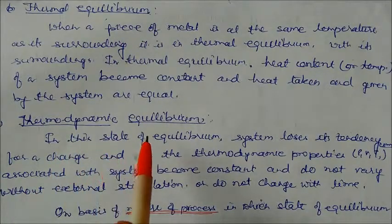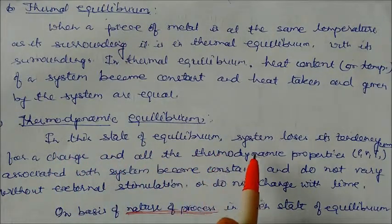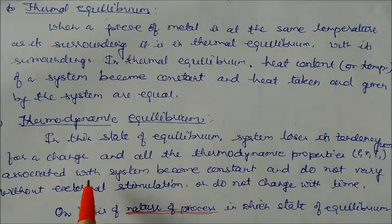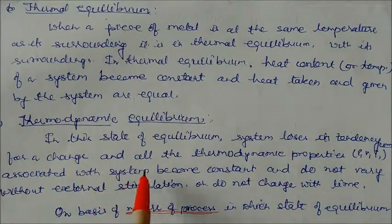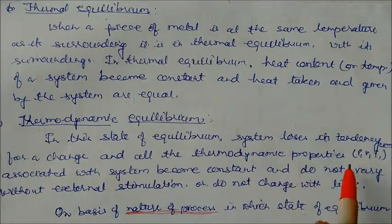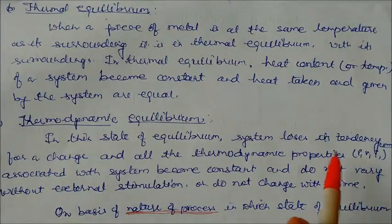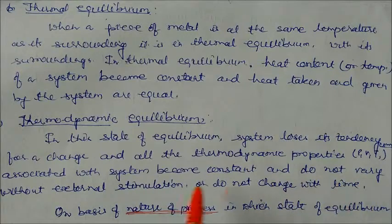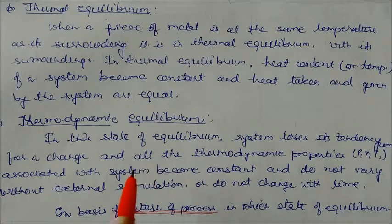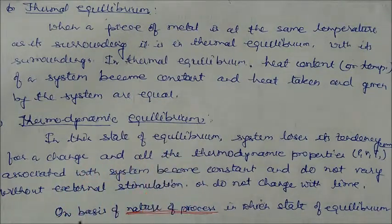Similarly, thermodynamic equilibrium. In this state of equilibrium, a system loses its tendency for change. All thermodynamic properties — pressure, volume, temperature — associated with the system become constant. These do not vary without external stimulation and do not change with time. This state is called thermodynamic equilibrium.